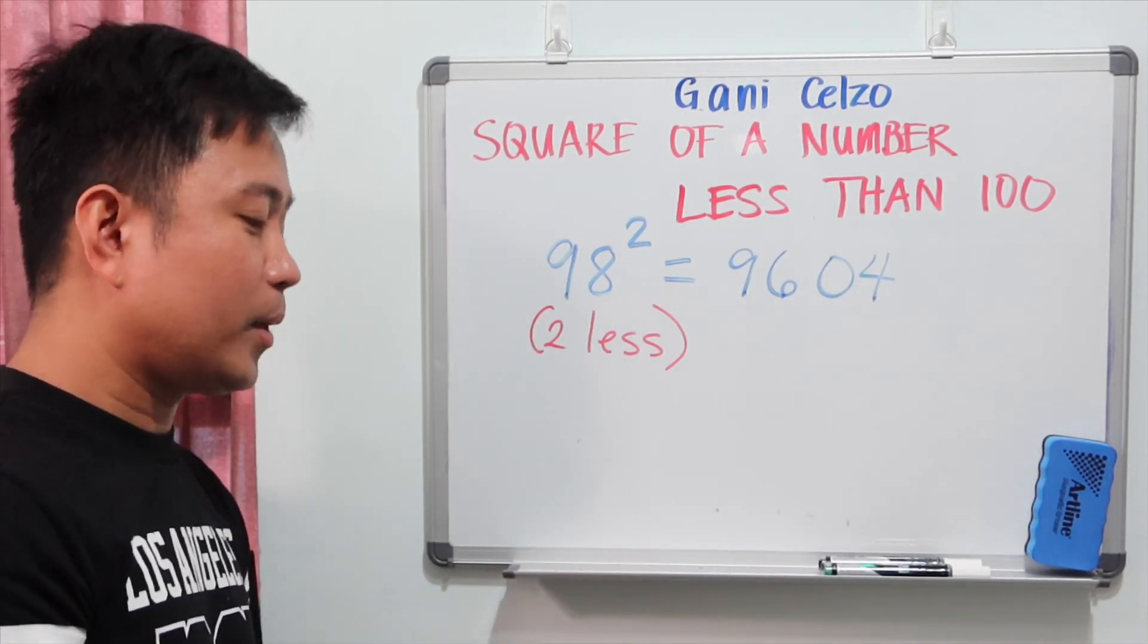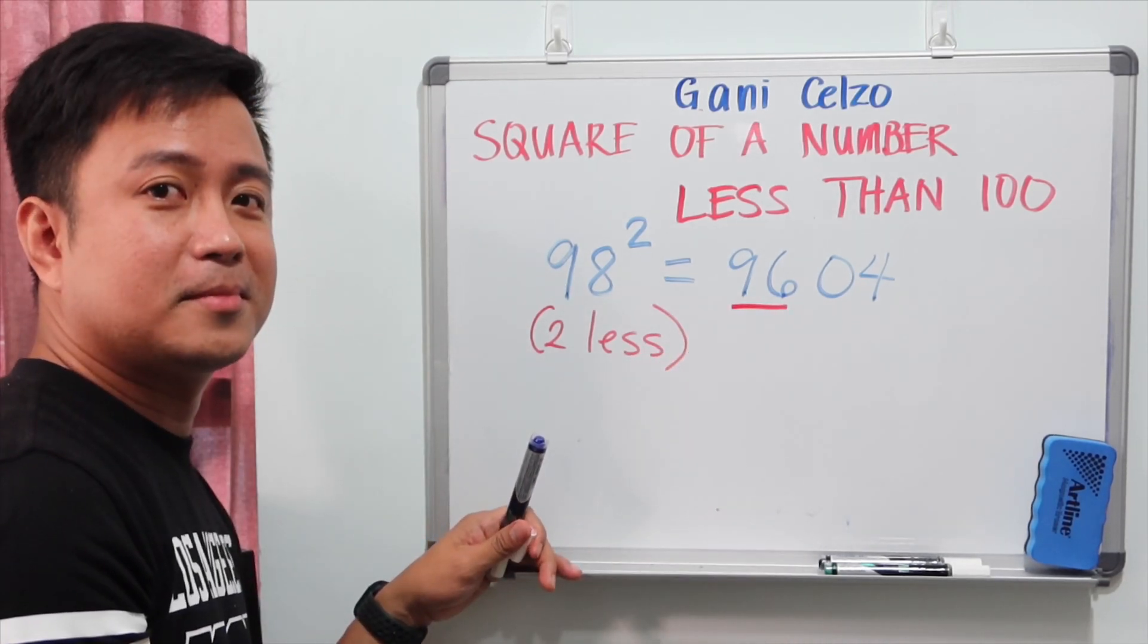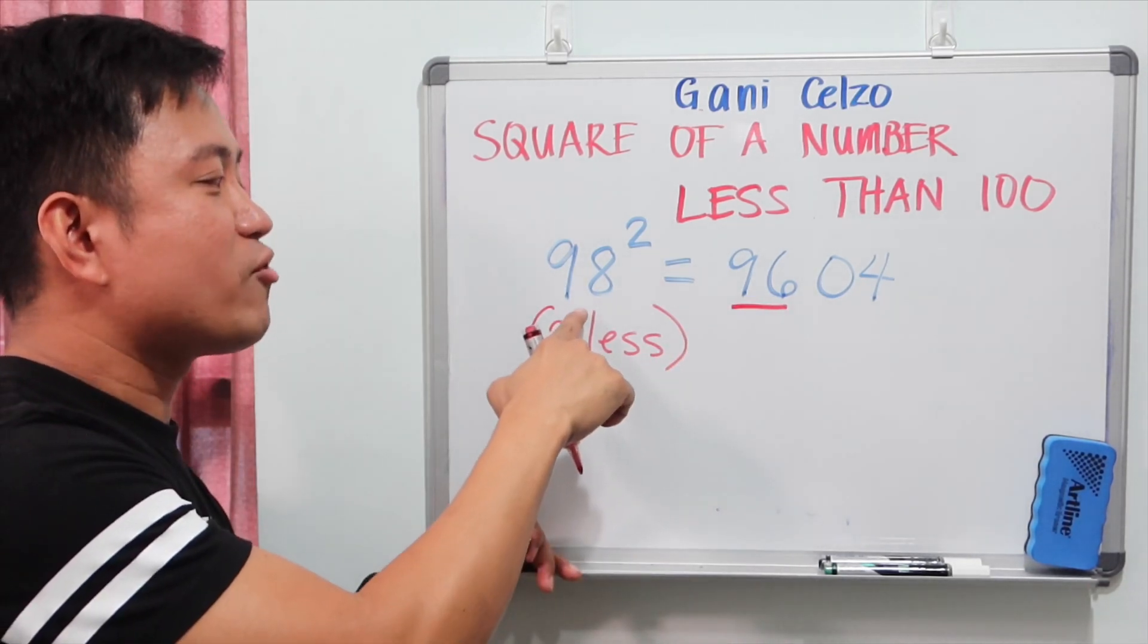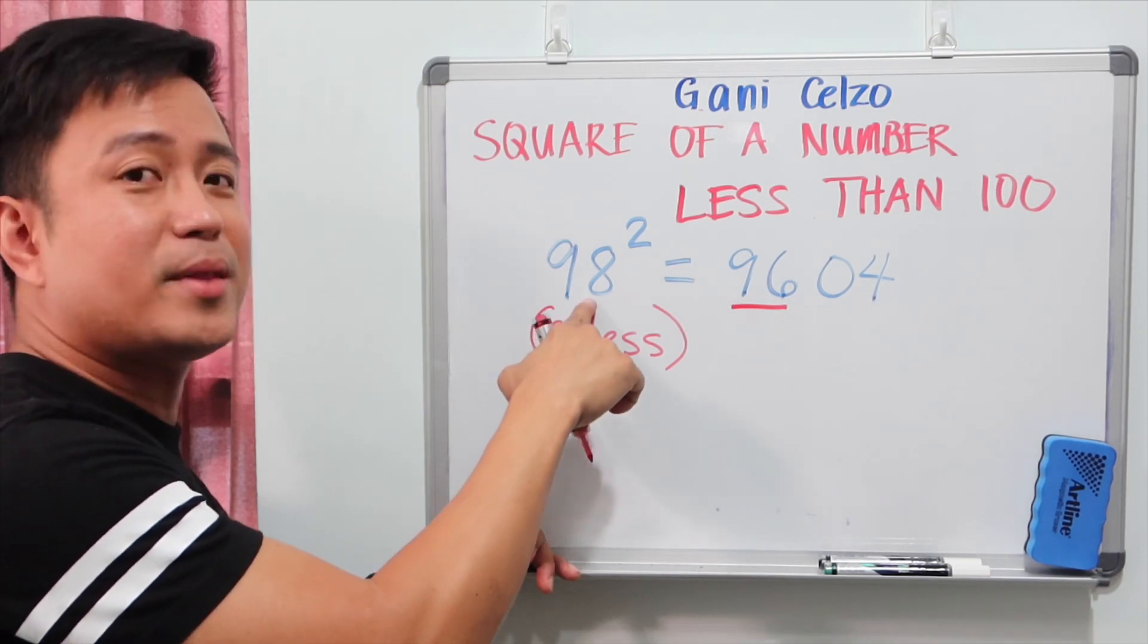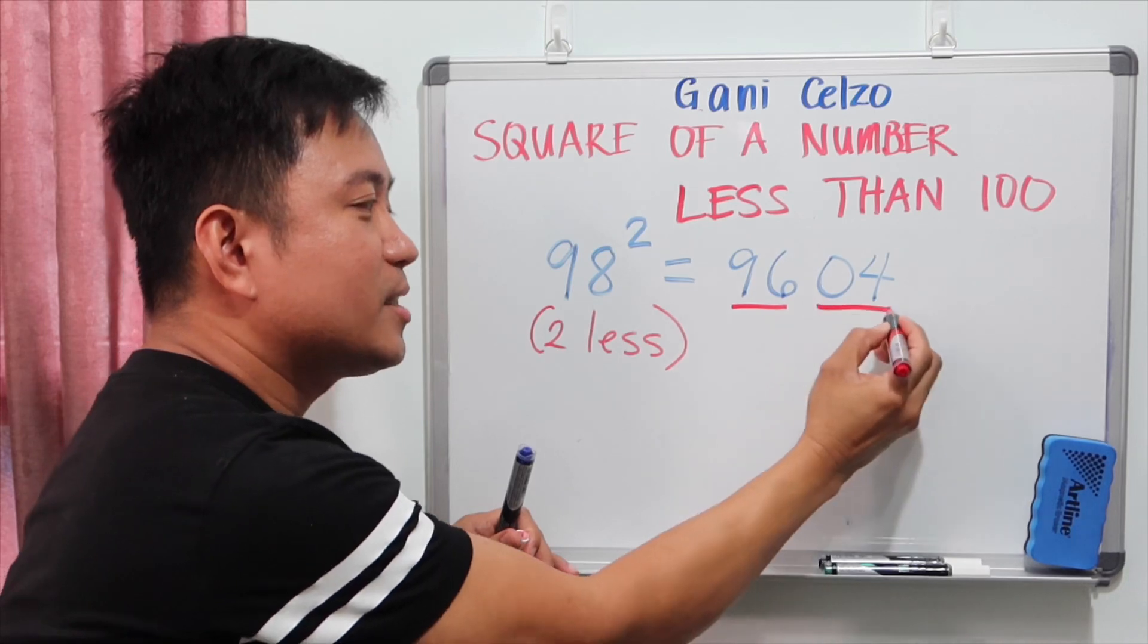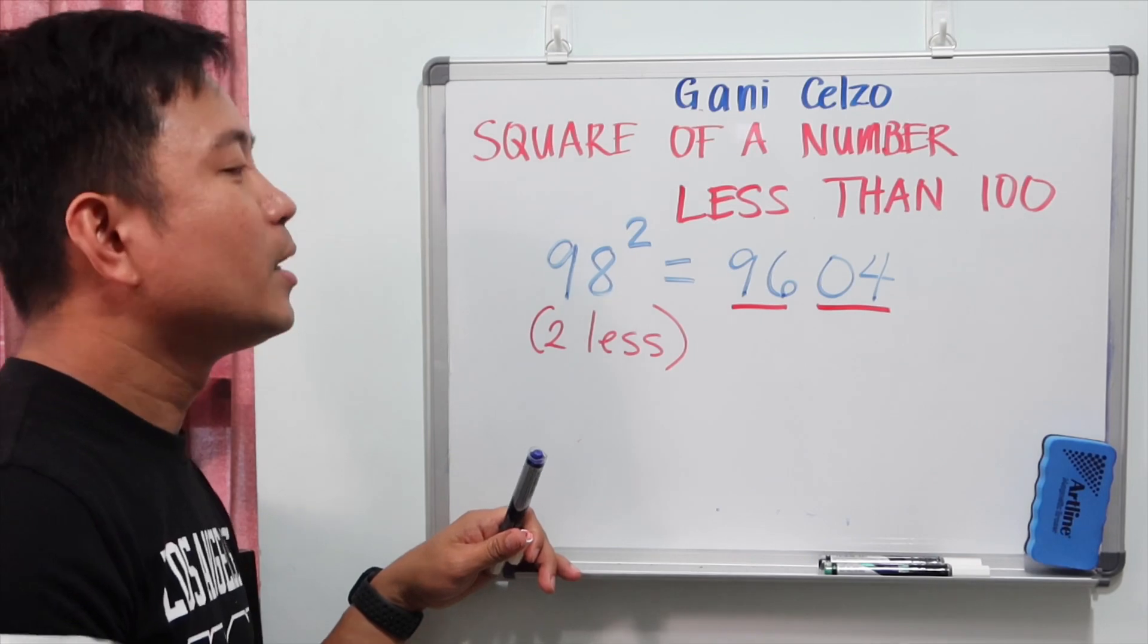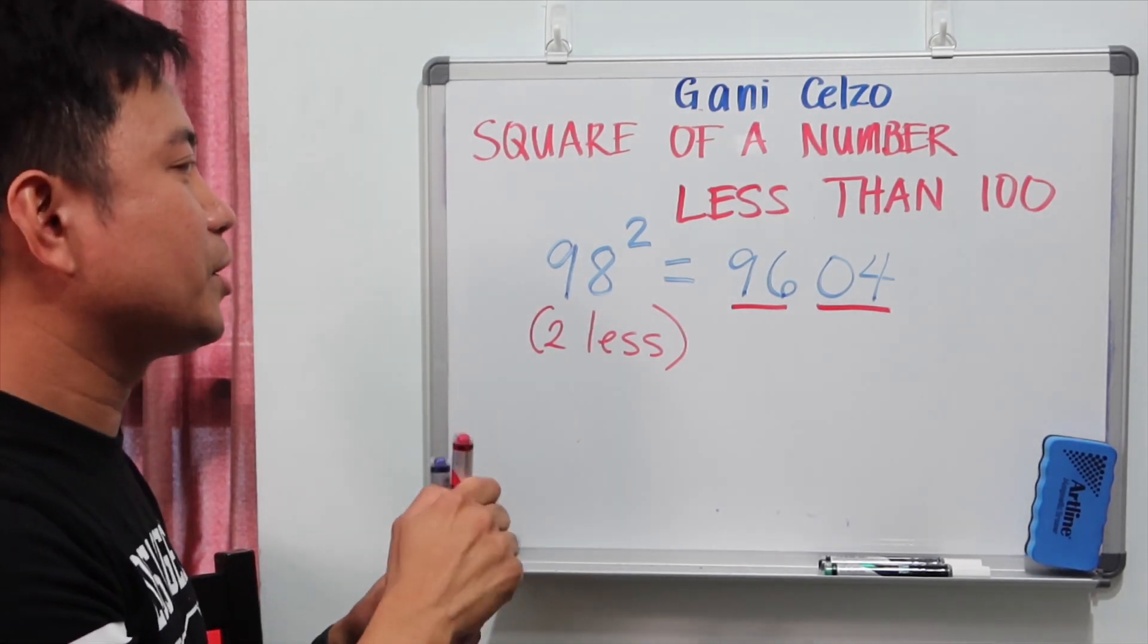Can you guess where did I get that 96? Yes, you're right. I subtracted 2 from 98, so that's 96. And the last two digits? 2 square, just like the previous problems. So we have 9,604.